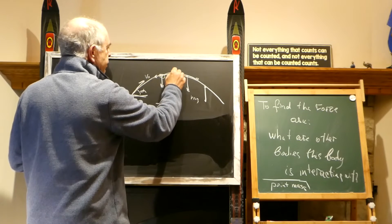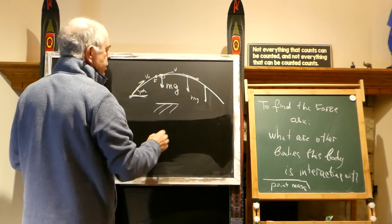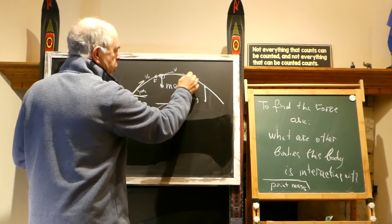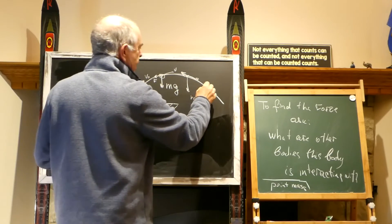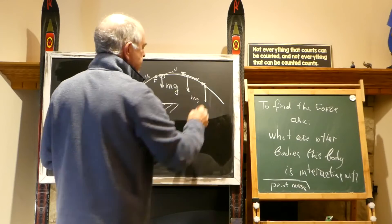If velocity is here, there would be another force. And when velocity would be turned, the drag would be this way. And here the drag would be this way.